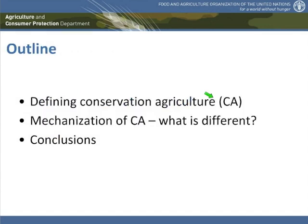In order to do this, I will briefly revisit the definition of conservation agriculture, because we need to know exactly what we are talking about in terms of field operations when we come to the equipment. I will then go into more detail about the different operations and equipment used in conservation agriculture, and the differences from conventional agriculture, and finally come to some conclusions.